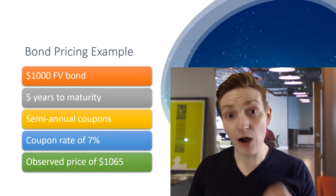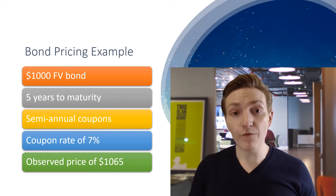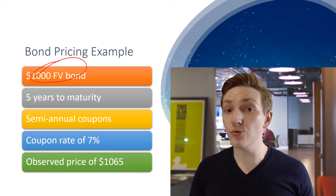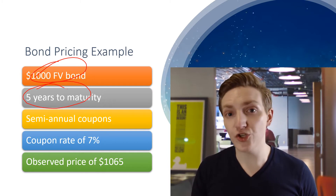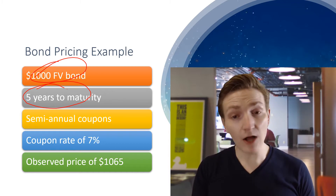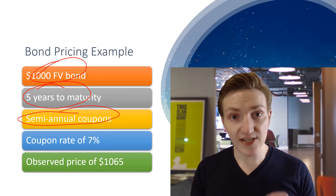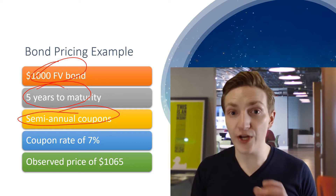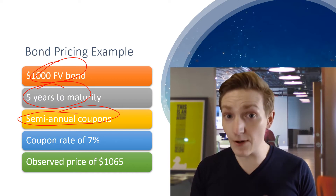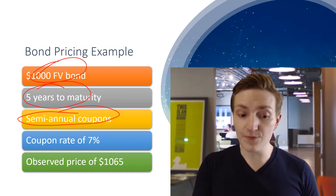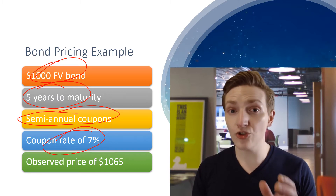Let's set up an example of how we'd go through and get our yield to maturity. Suppose we observe a bond with a face value of $1,000 — that's given in the term sheet. Suppose the bond has five years to maturity and pays semiannual coupons, which is relatively normal. The approach applies regardless of periodicity — coupons could be paid annually, quarterly, monthly, or whatever. The same approach applies using Excel Solver.